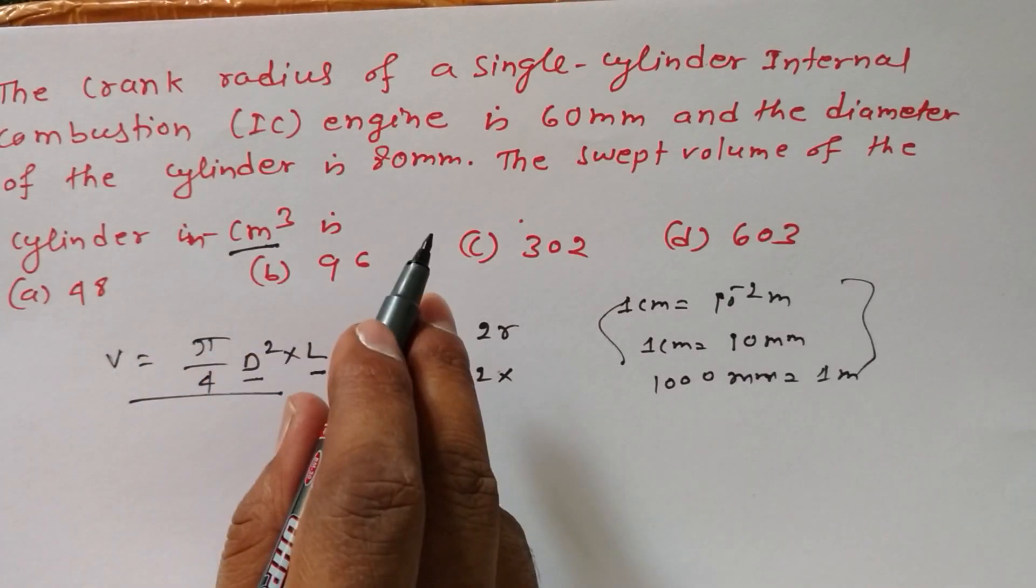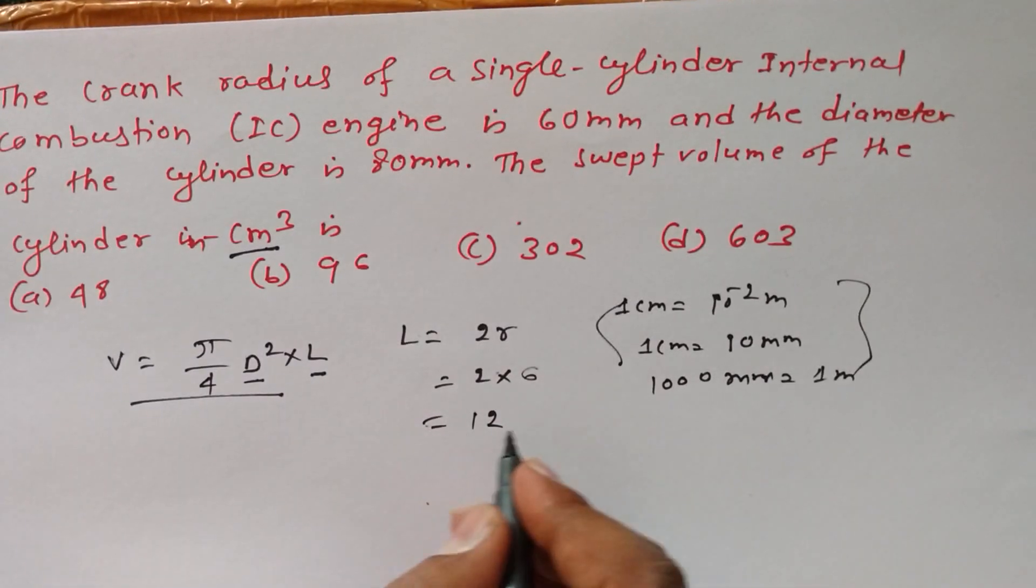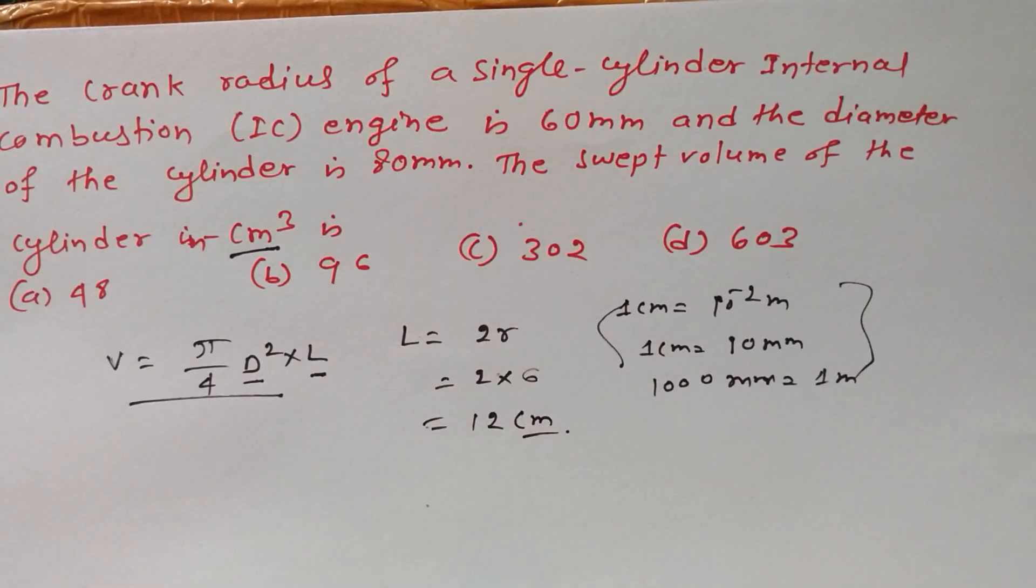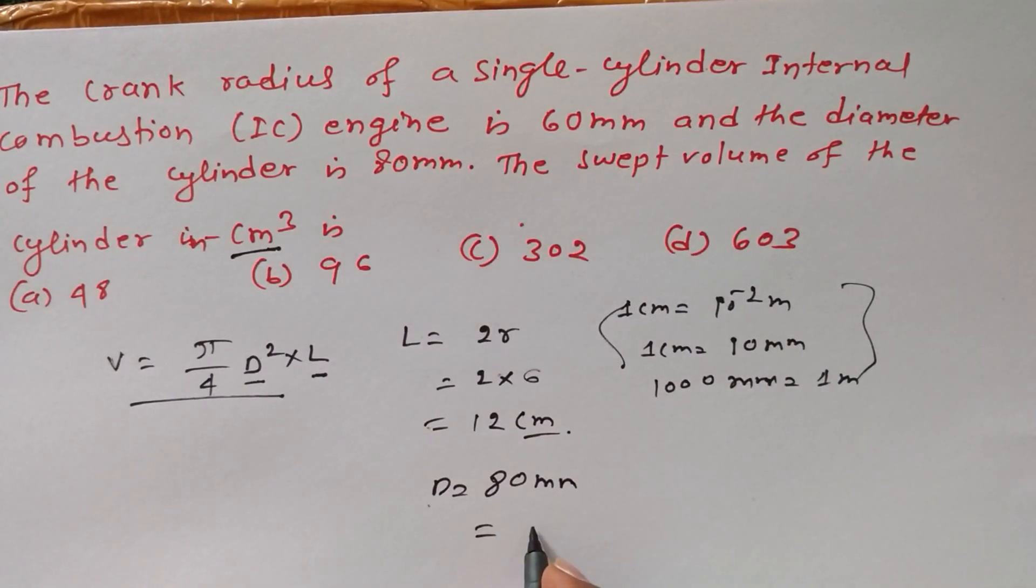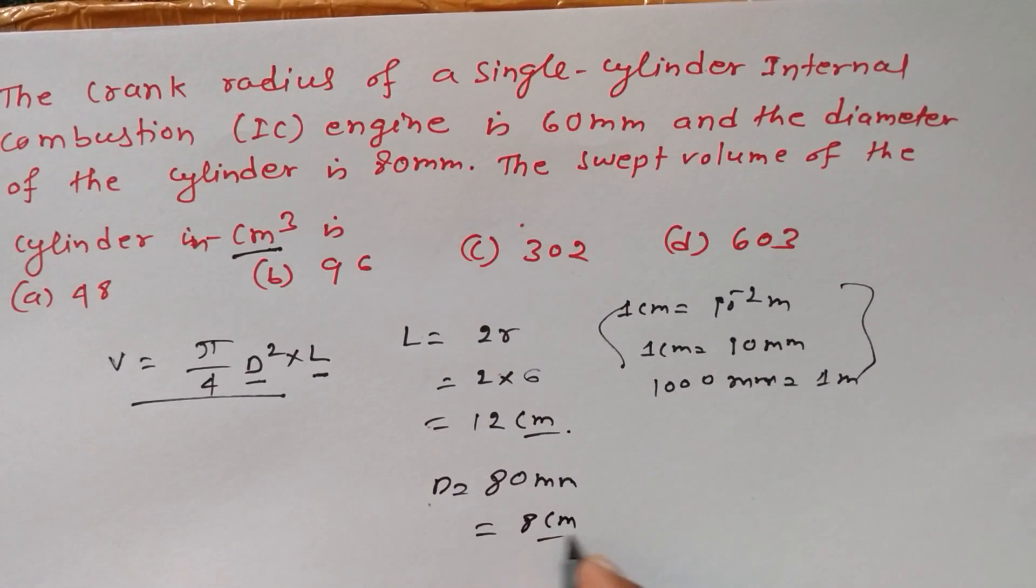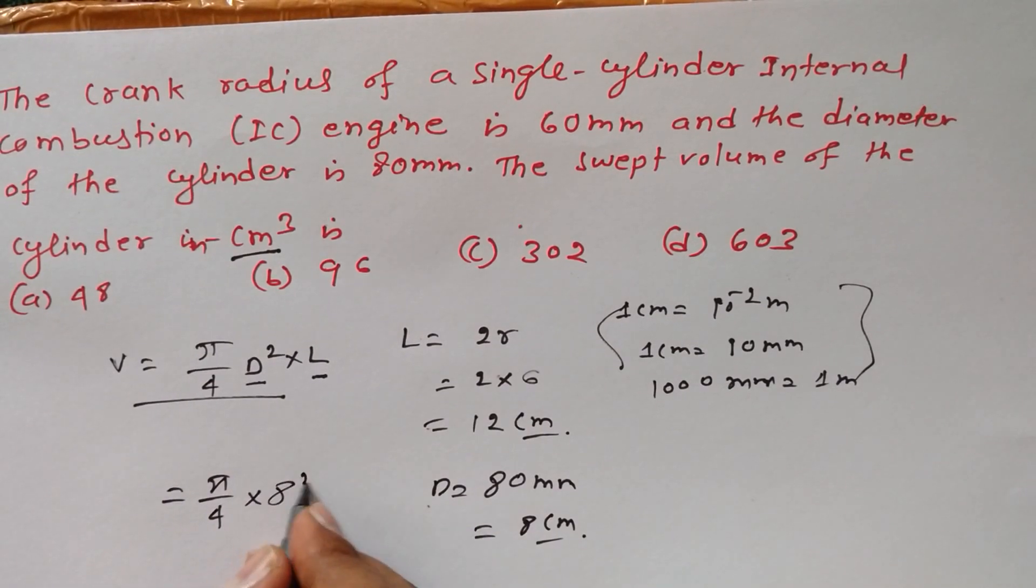Is equal to 12. So 12 centimeter is its length. D is equal to how much? 80mm means 8 centimeter. So first of all, put all these values: 80 square, 12.